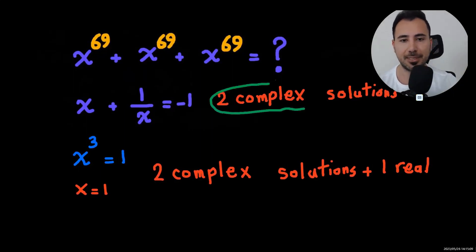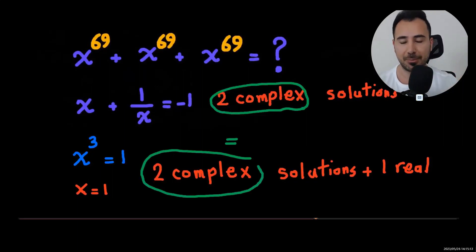The original equation had two complex solutions which are the same. I'm going to circle them green. These two complex solutions are the same as these two complex solutions. We multiply this by x minus one, that's why x equals one is a solution to this equation.